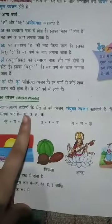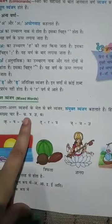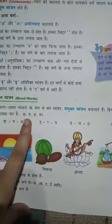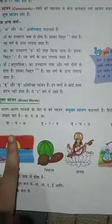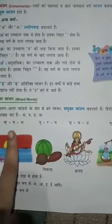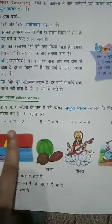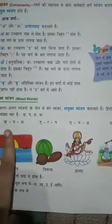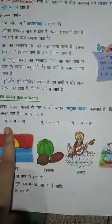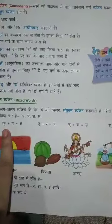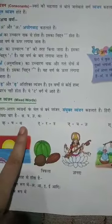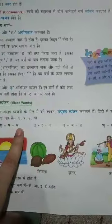In Hindi, yeh jo word hai — Sayyukht Venjan — yeh char Sayyukht Venjan hote hai. Yeh kya se bante hai? Alag alag Venjano ke meel se bane Venjan Sayyukht Venjan kehlate hai. Ka ke niche halant lagaya hota hai, plus Sha — kya bante hai? Ka + Sha = Sha, as in Shatriye.